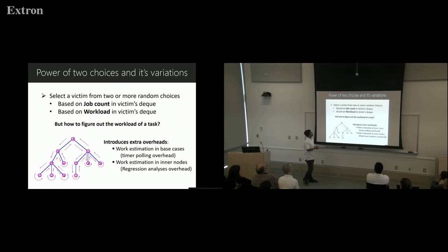To improve this with probabilistic theory, we proved that instead of selecting a victim randomly, if you select multiple potential victims and select one of them based on the job count or workload, you can improve your load balancing algorithm drastically.